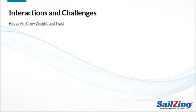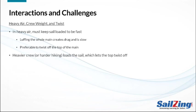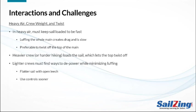Now let's explore some interactions and challenges involving twist. Heavy air is a challenge especially for lighter crews. The problem in heavy air is drag, especially if you depower by luffing too much. It's best to keep as much of the main loaded and depower the top of the sail with twist — this reduces heeling force. Heavier crews have an advantage because when the sail is loaded, the leech will twist off since it's not supported by the mast or boom. Lighter crews must find ways to depower that minimize luffing — one choice is a flatter sail with less depth up top, which will have an open leech and twist off more easily in puffs.